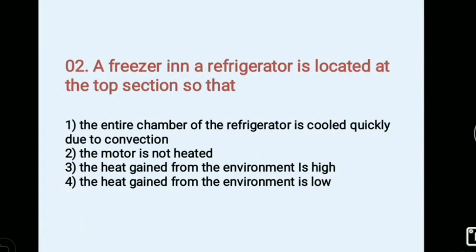The freezer in a refrigerator is located at the top section so that. Options: 1) the entire chamber of the refrigerator is cold quickly due to convection, 2) the motor is not heated, 3) the heat gain from the environment is high, 4) the heat gain from the environment is low. Answer 1, the entire chamber of the refrigerator is cold quickly due to convection.